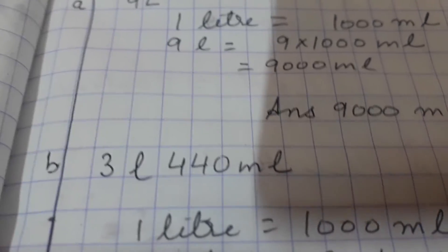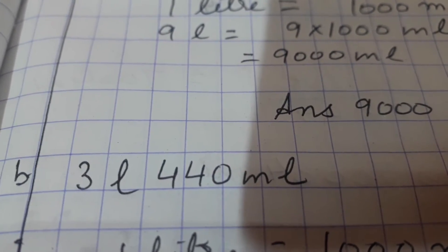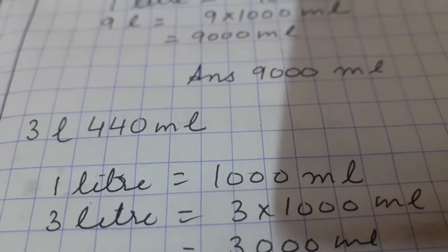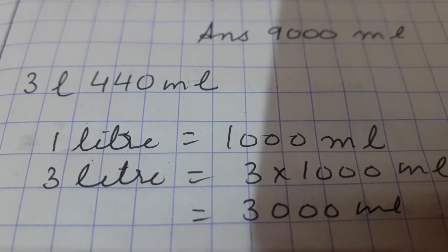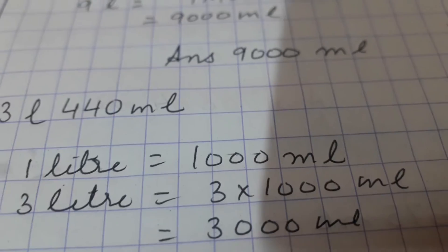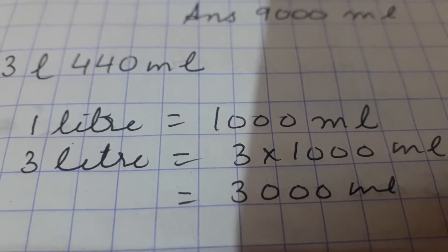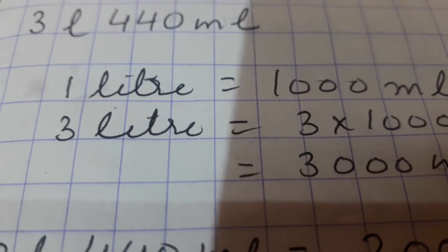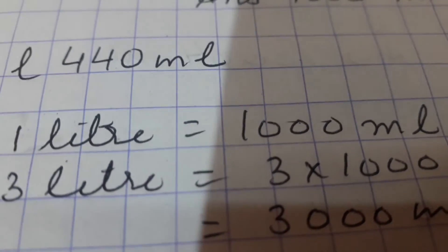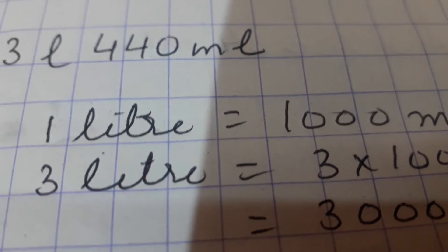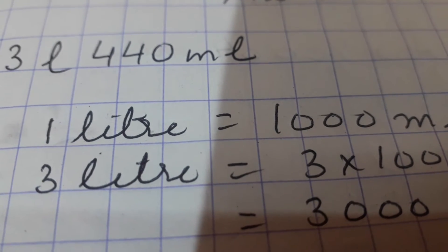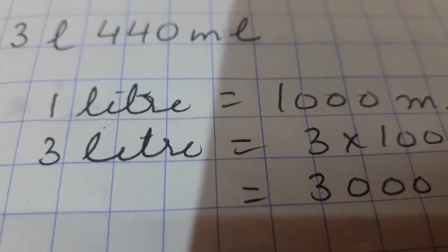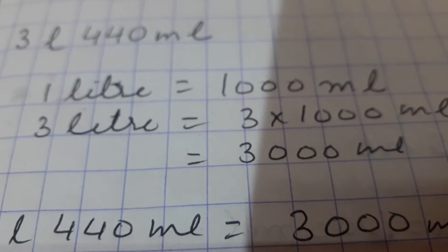Now see the next question: three liters, four hundred and forty milliliters. Three liters is equal to three multiplied by one thousand, which is equal to three thousand milliliters. In this question, there are two parts — one is three liters, another is four hundred and forty milliliters. Four hundred and forty is already in milliliters, so we won't convert it again. We will just convert three liters, and we get three thousand milliliters.